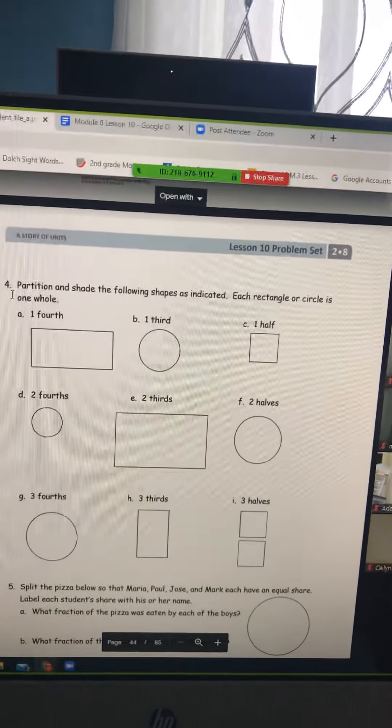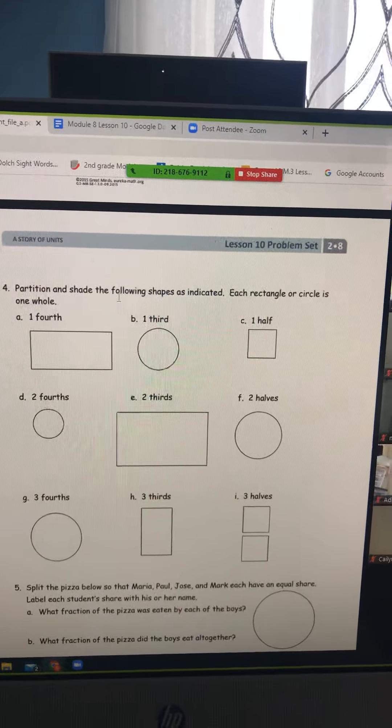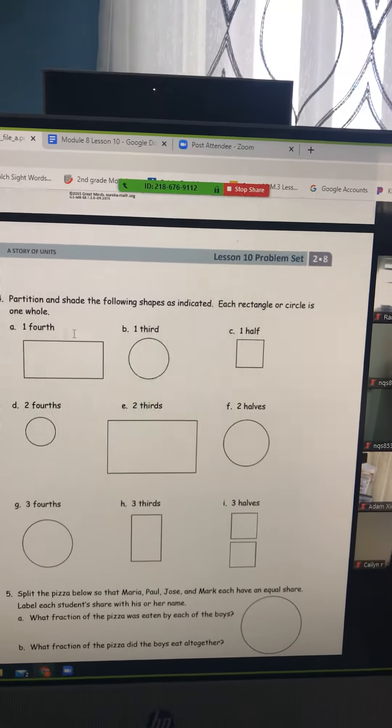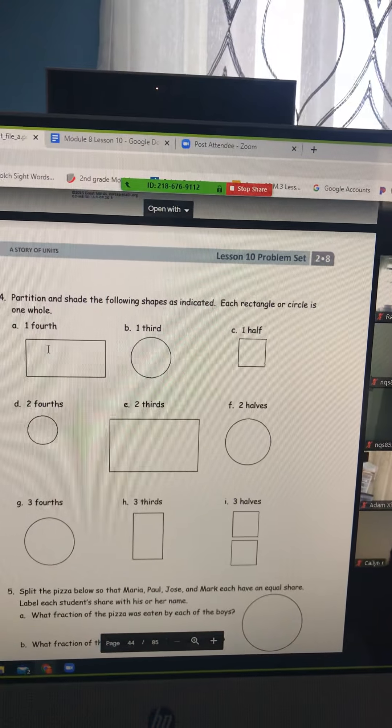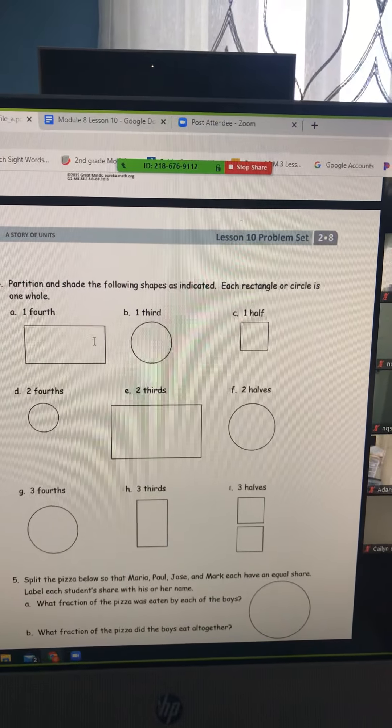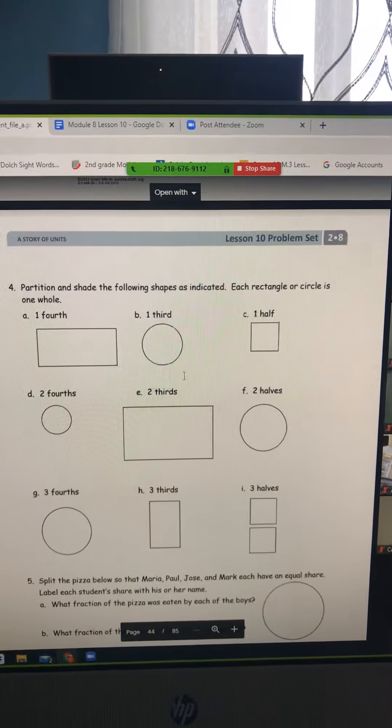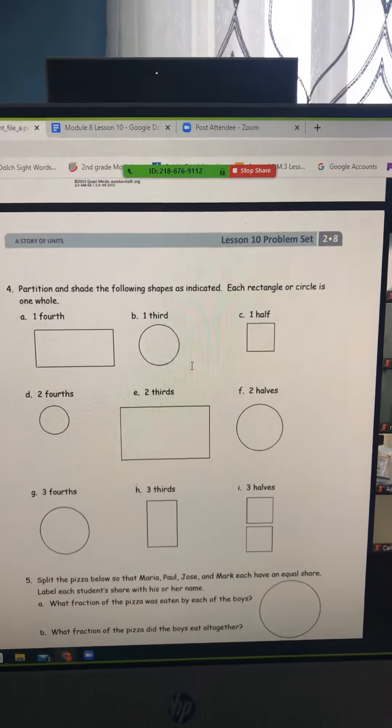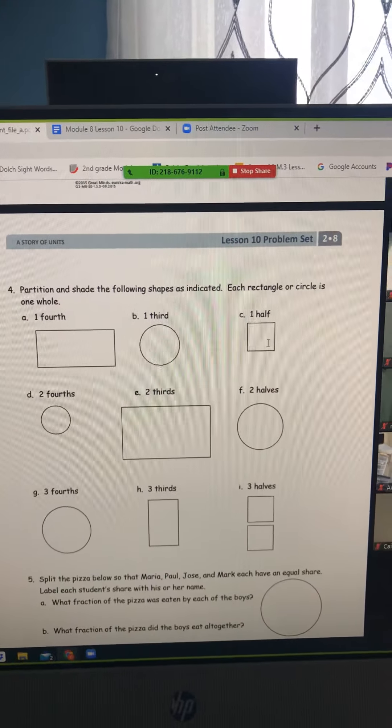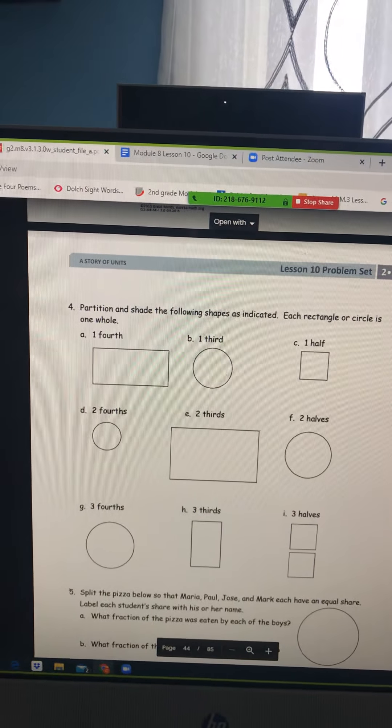Question four, which is on the next page. Partition and shade the following shapes as indicated. Each rectangle or circle is one whole. Please partition this to show fourths and then shade in one fourth. Partition this to show thirds and then shade in one third. Partition this to show halves and then shade in one half.